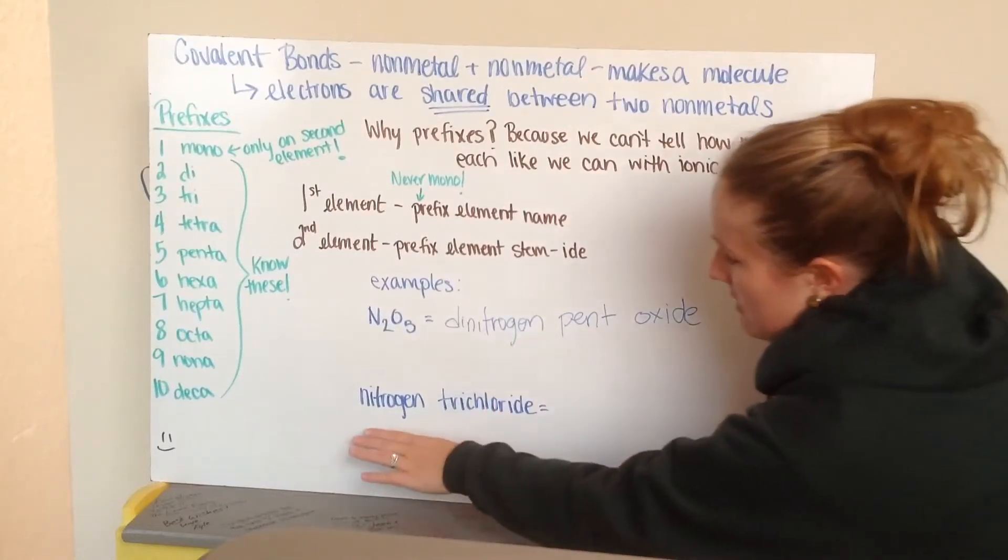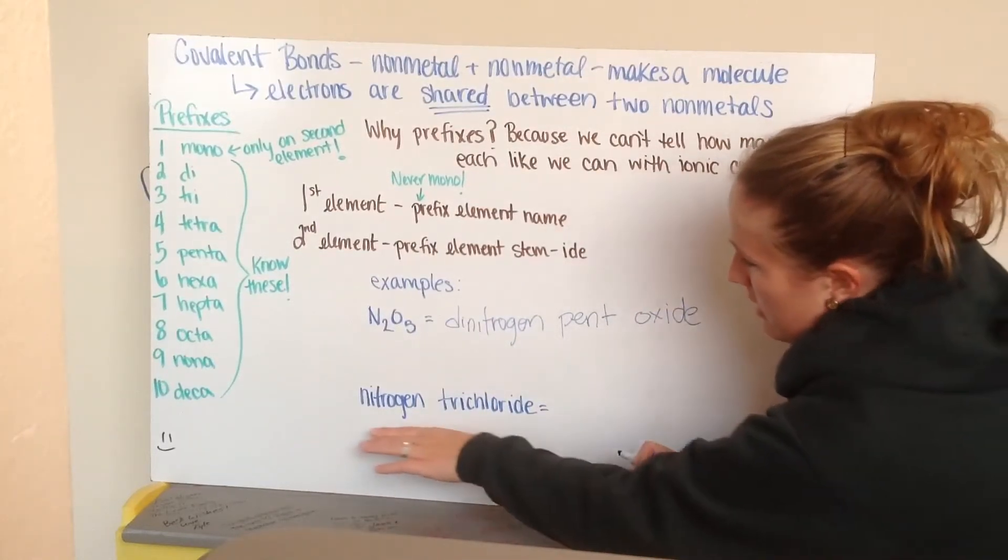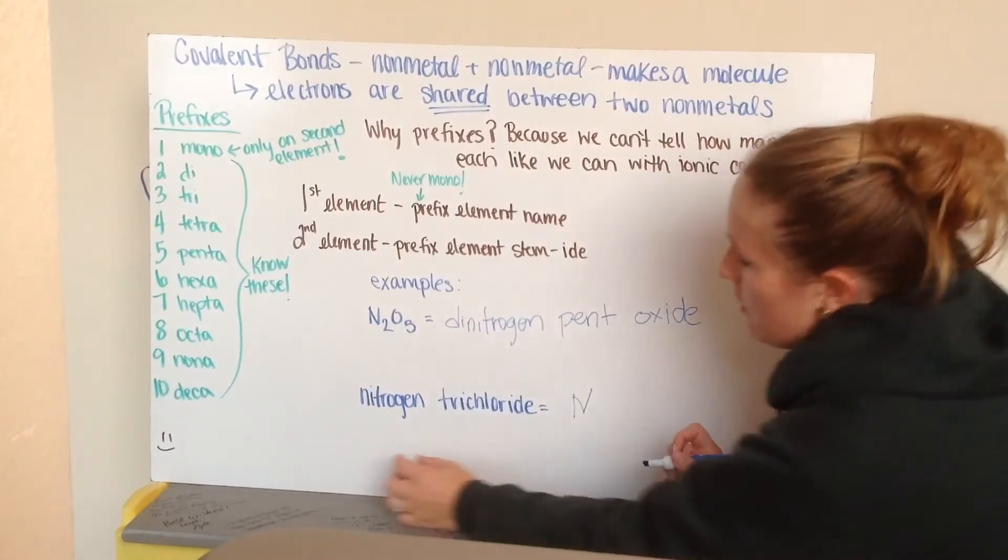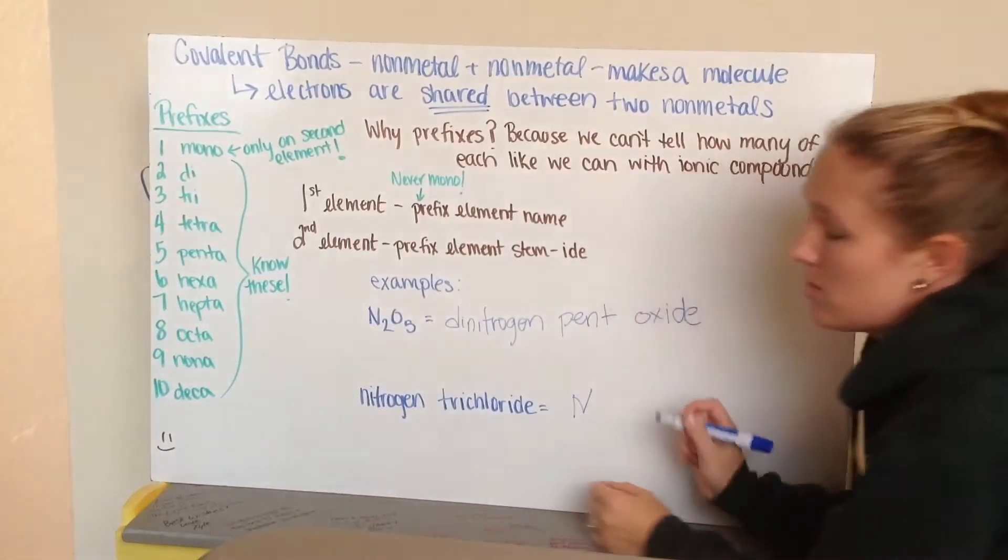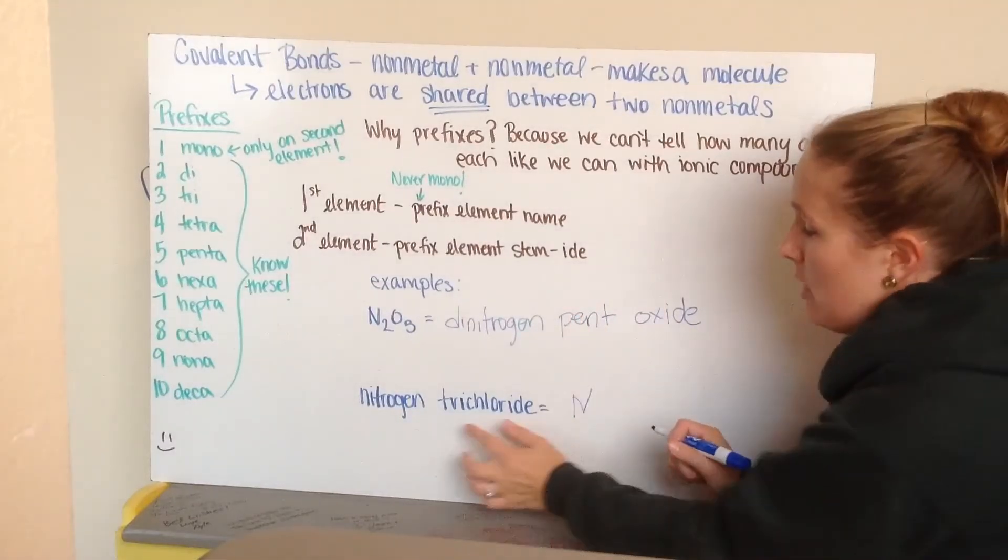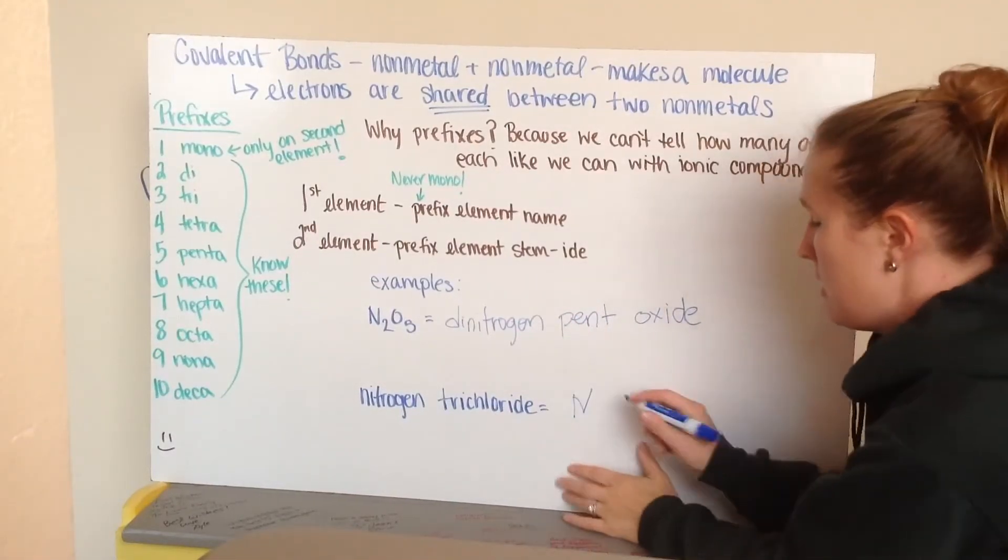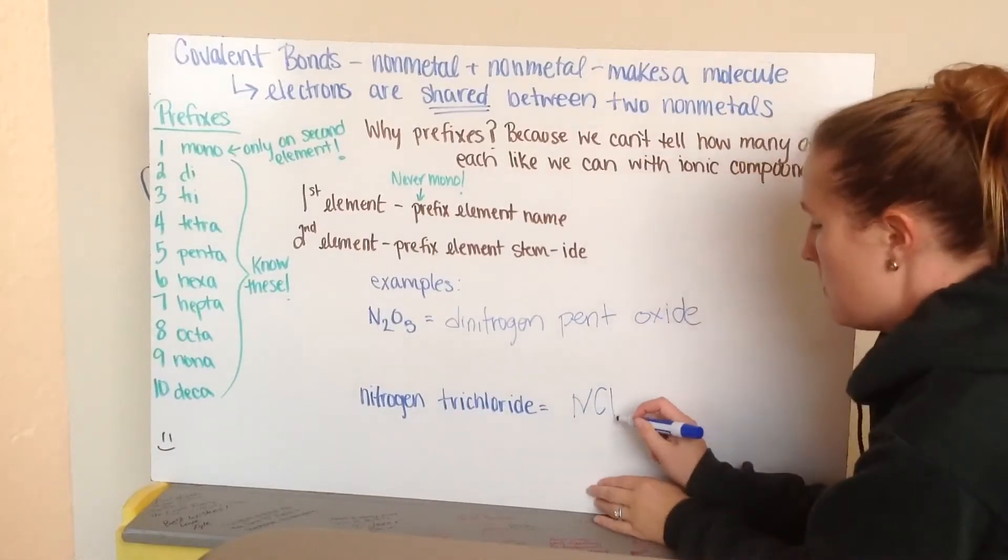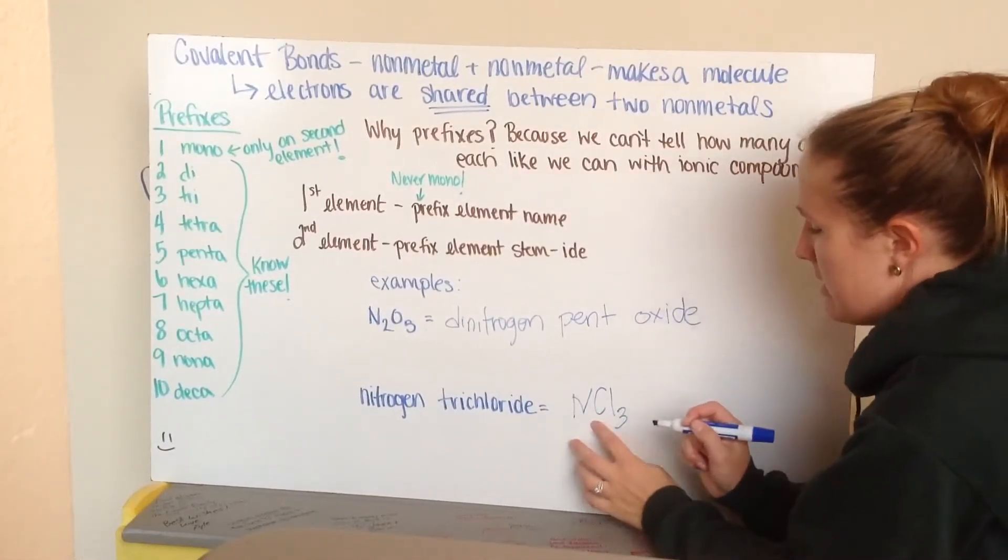Our next example we have is nitrogen trichloride. Nitrogen, we write N. We don't have a prefix in front of nitrogen, so that tells us we just have one nitrogen. Trichloride tells us we have chlorine. And the tri in front tells us we have three. So, we get NCl3.